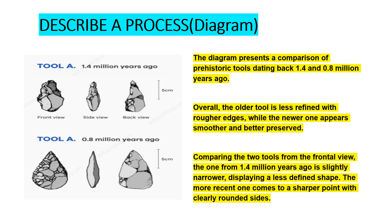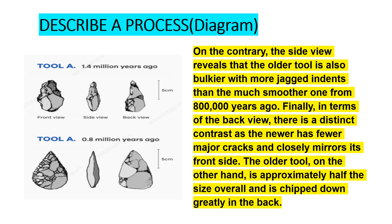Let's see how we can describe a process. As discussed, we're going to make four different paragraphs. The first is an introduction: 'The diagram presents a comparison of prehistoric tools dating back 1.4 and 0.8 million years ago.' Overall, the older tool is less refined with rougher edges, while the newer one appears smoother and better preserved. Comparing the two tools from the frontal view, the one from 1.4 million years ago is slightly narrower, displaying a less defined shape. The more recent one comes to a sharper point with clearly rounded sides.